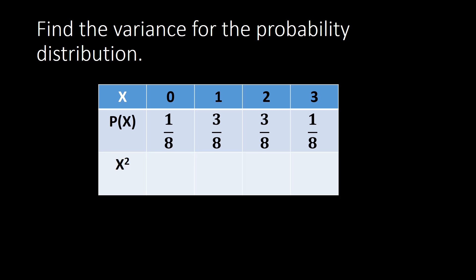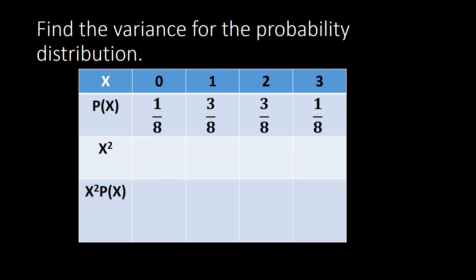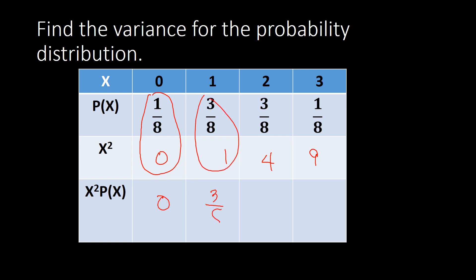To find the variance, you can use the formula or the tabular method, where we add two more rows. The first row is x², where we square each x value: zero squared is 0, one squared is 1, two squared is 4, and three squared is 9. The next row is x²·P(x), the product of x² and P(x).